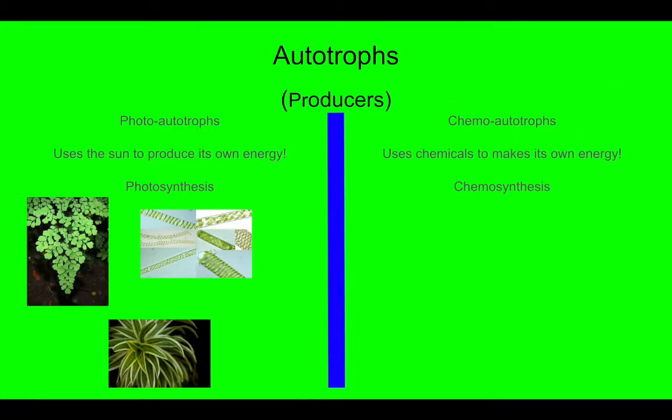Our second type of autotrophs would be chemoautotrophs. Chemo, which would be short for chemical, they use chemicals to make their own energy like methane and some of the different gases that would come out of the earth. This is a process known as chemosynthesis. Chemosynthesis would allow a bacteria, which are your most common chemosynthesizers, to produce their own energy and food source such as glucose from chemicals.